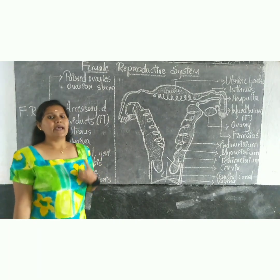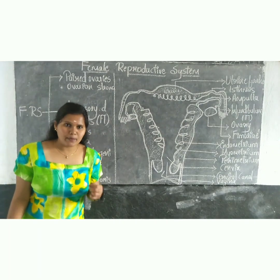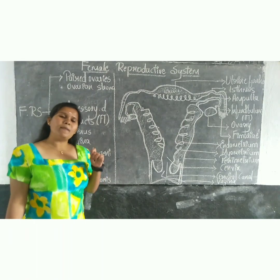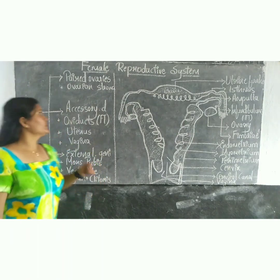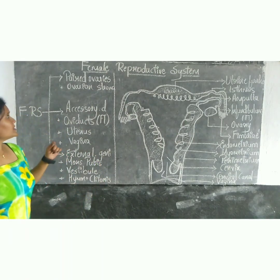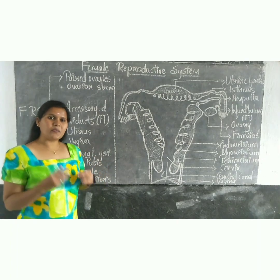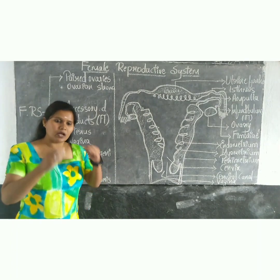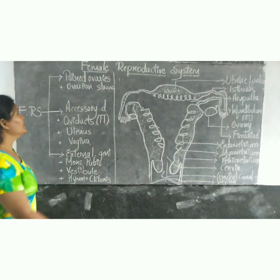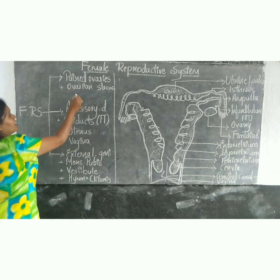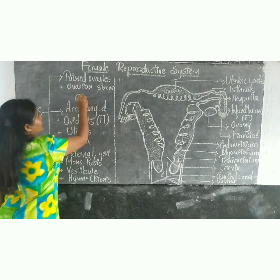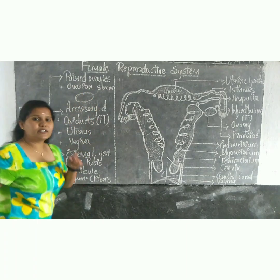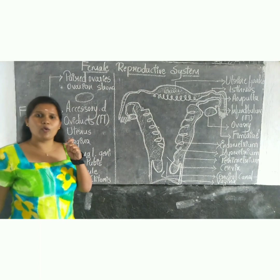Coming to the paired ovaries, there will be two ovaries present in the lower abdomen, situated in the pelvic region. Each ovary is almond-shaped.